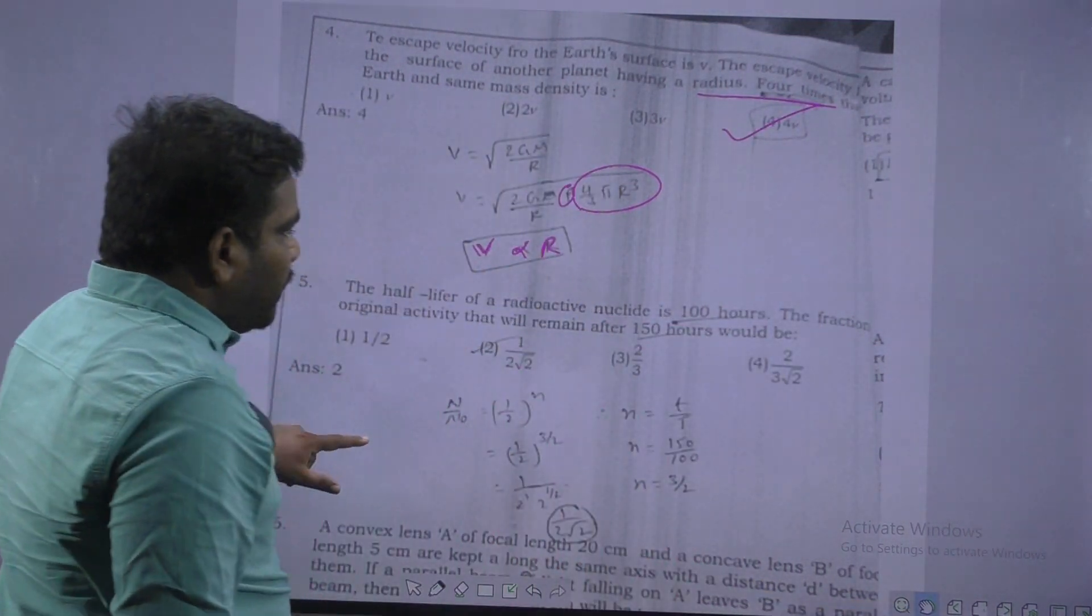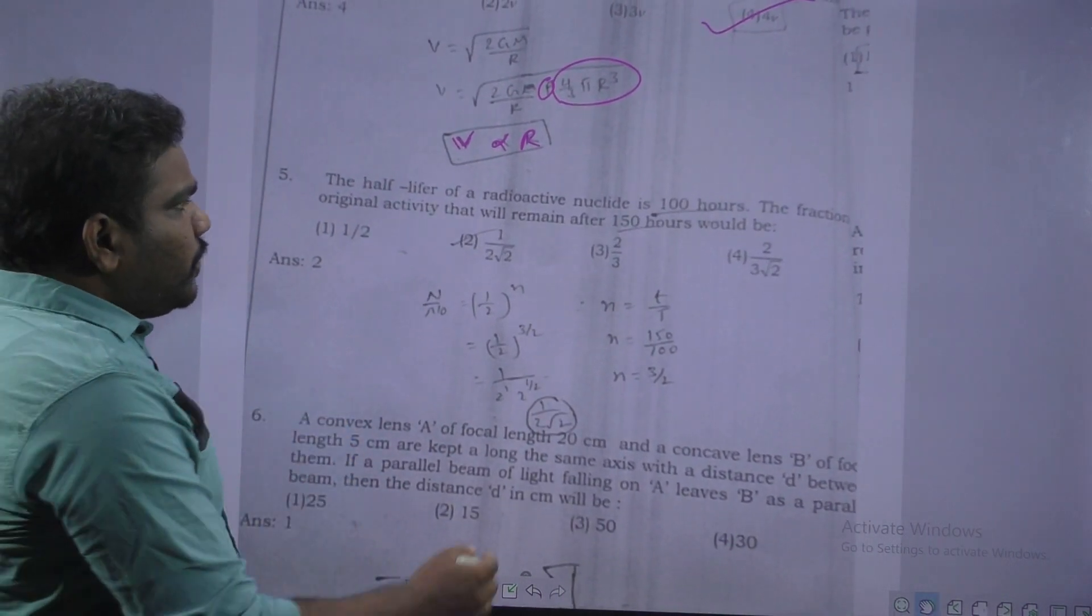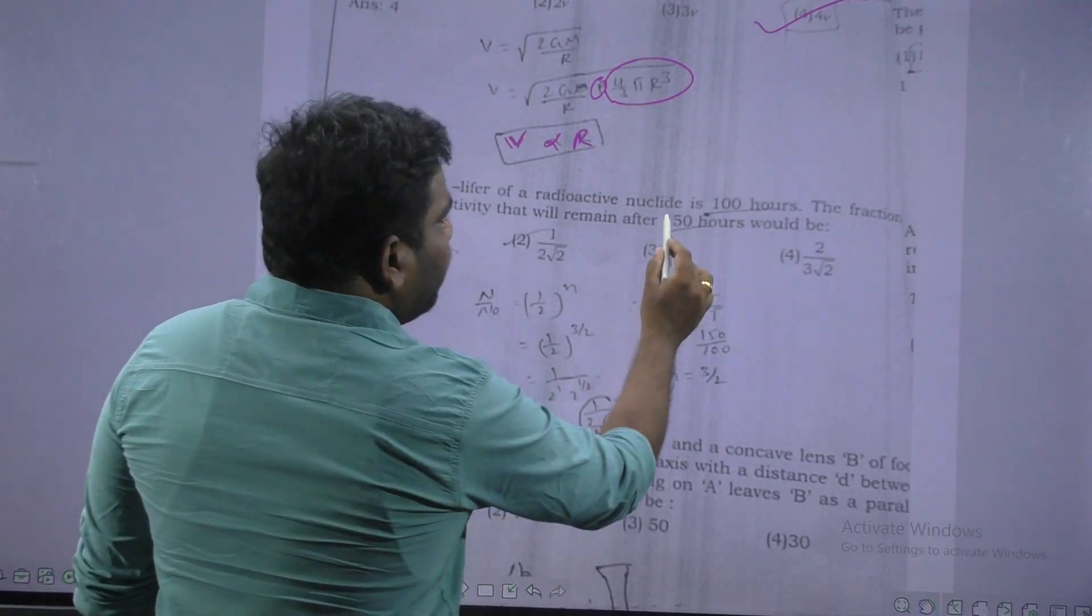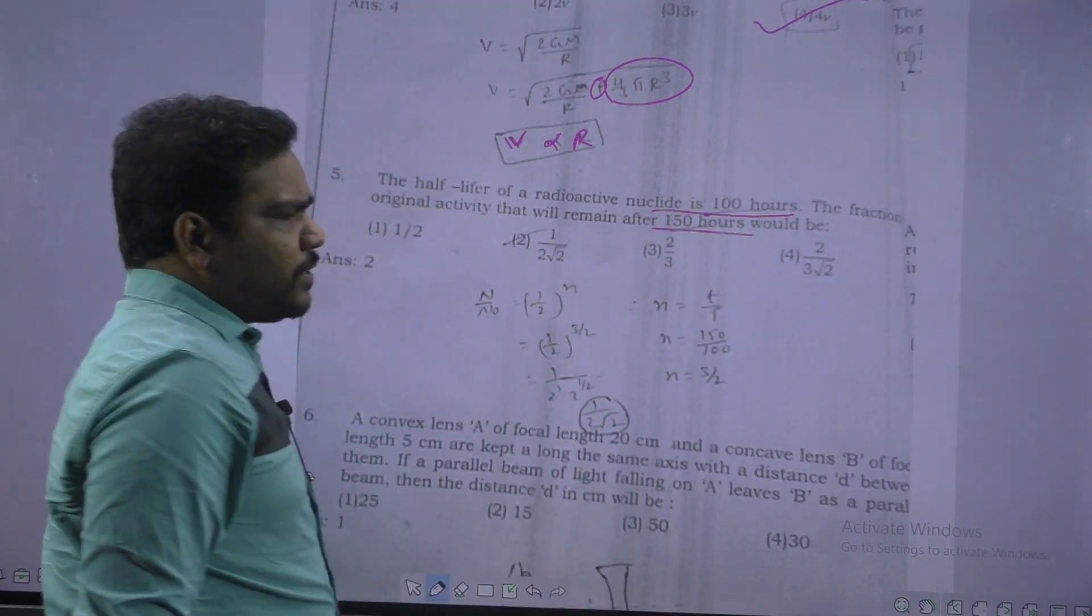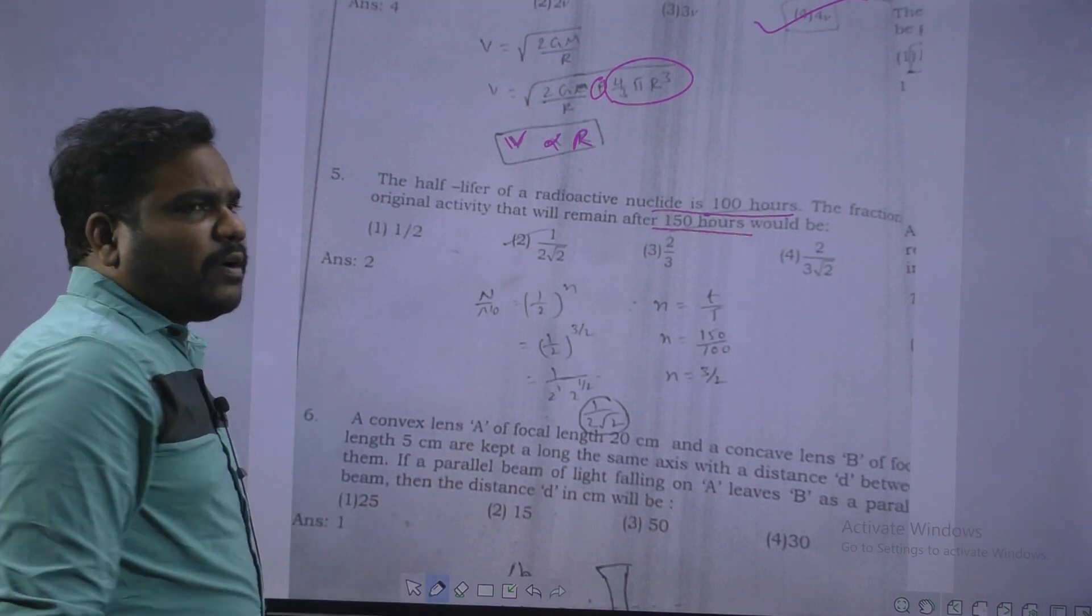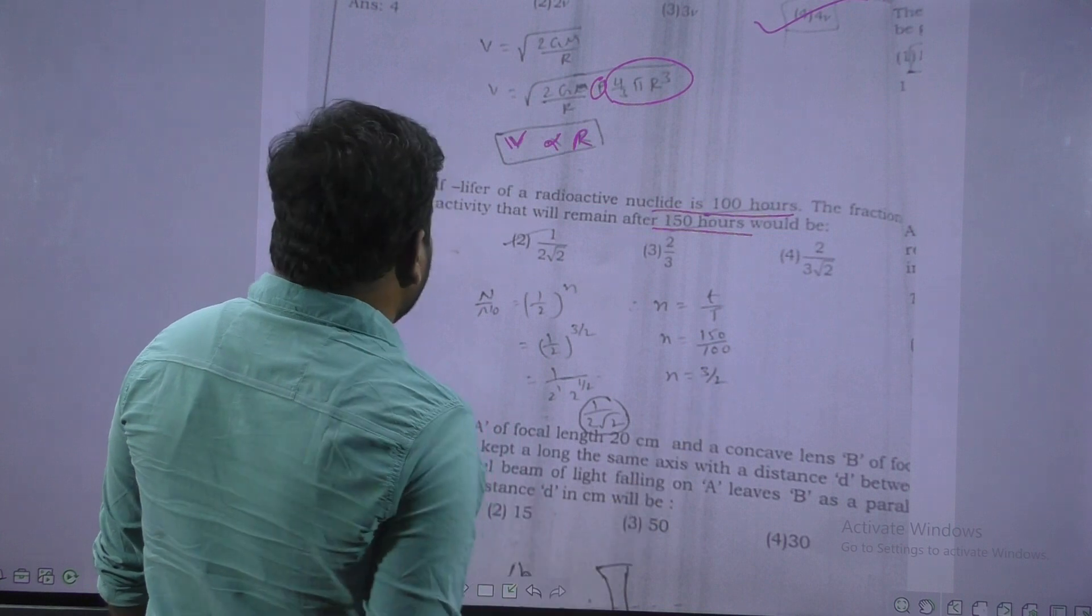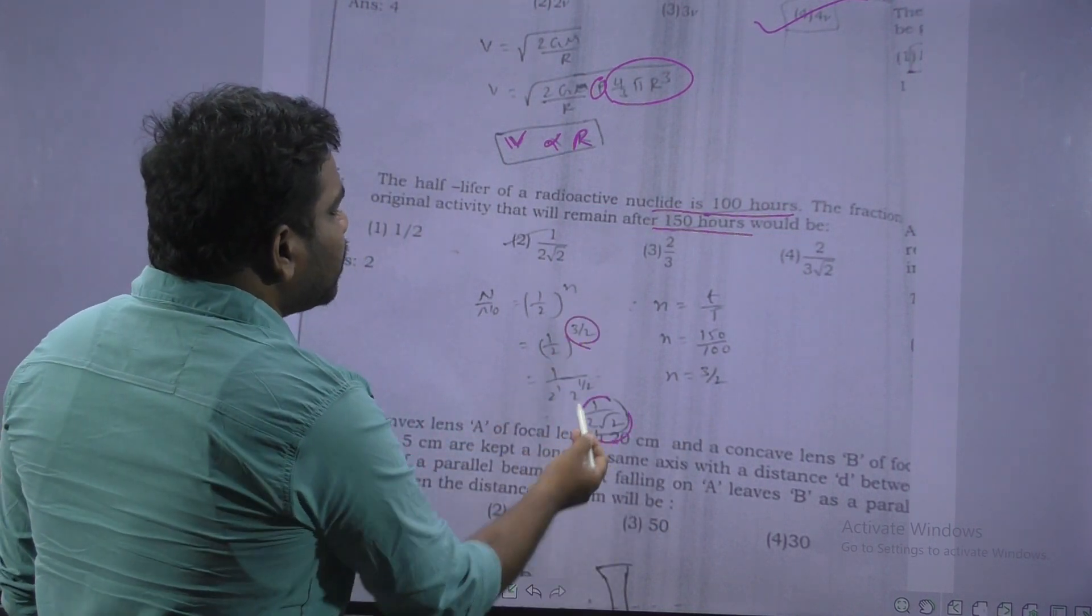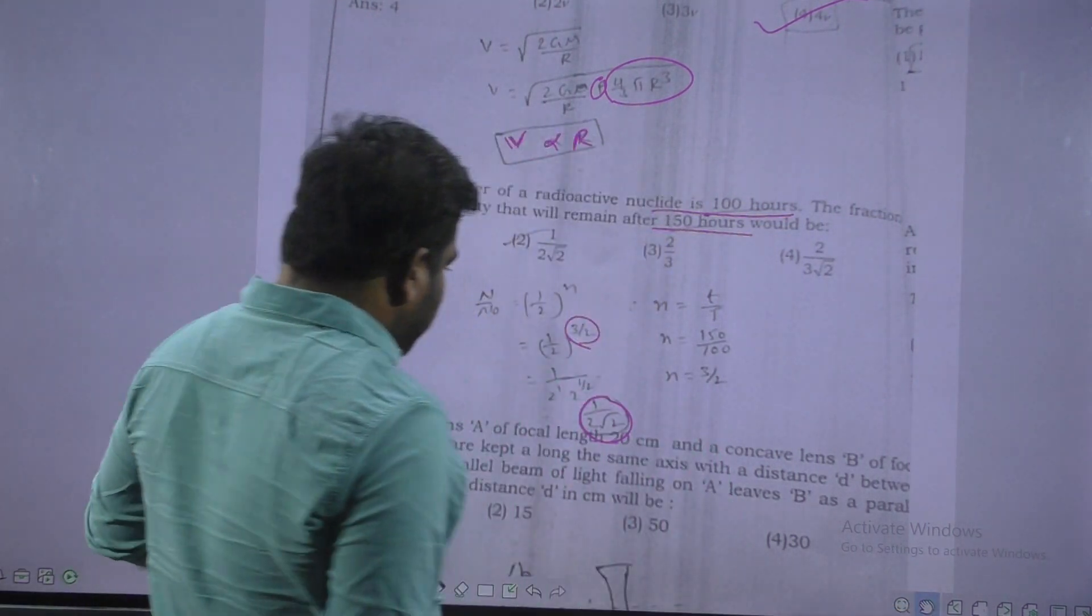Next, look at this question. This is based on radioactivity. Here is given time, half life is given 100 hours. Given time is 150 hours. So here is a fraction of remaining is asked. You know basic formula. N by N not is equal to 1 by 2 whole power n. Where n is T by T half, that is 3 by 2. So 1 by 2 whole power 3 by 2. This can be written as 1 by 2 root 2.